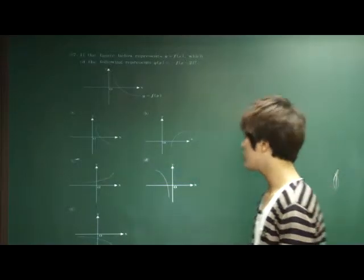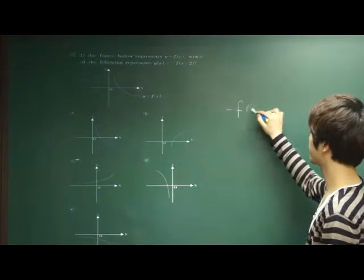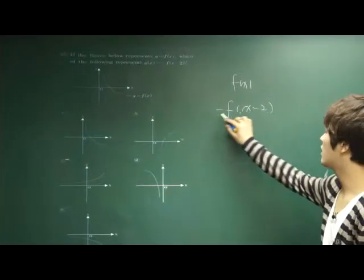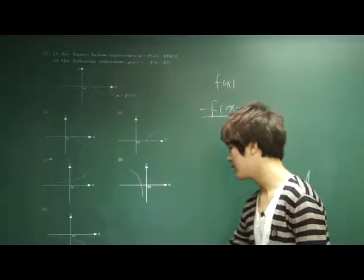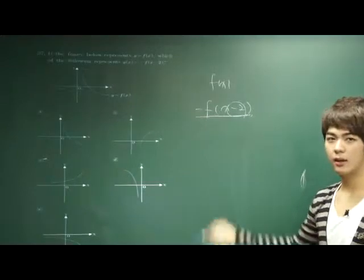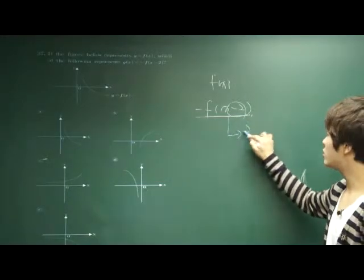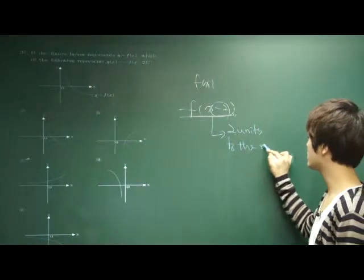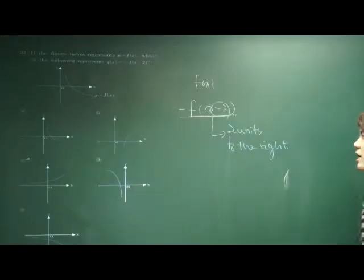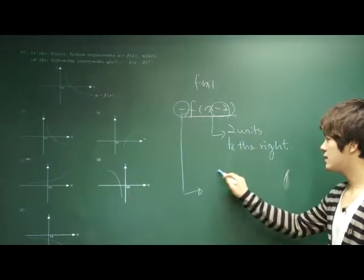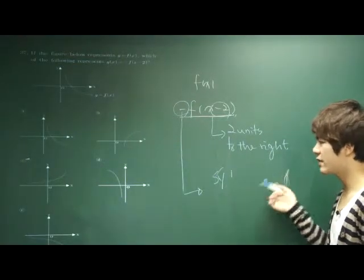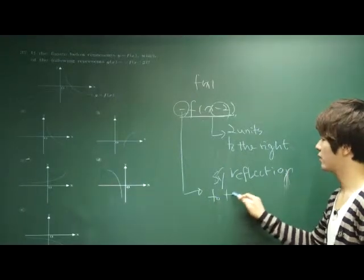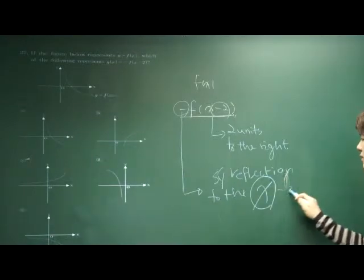So it is asking the transformation of the function. When the original function is f(x) function, and we are given a new function looking like this, what does this mean? This means a translation two units to the right. What about this? This signal means symmetric reflection, reflection to the x-axis, right?